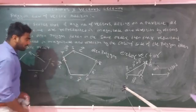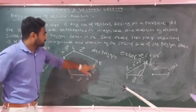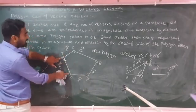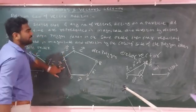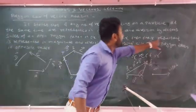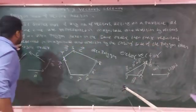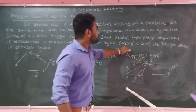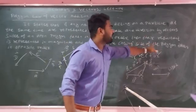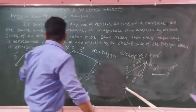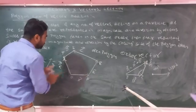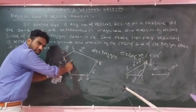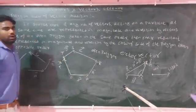So when we talk about the actual vectors of a polygon, the polygon is closed. The resultant is represented in magnitude and direction by the closing side of the polygon.